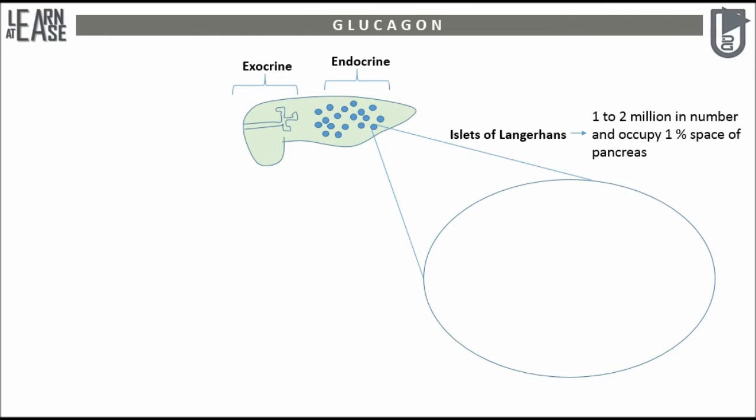Islets of Langerhans consist of 4 types of cells: alpha, beta, delta, and PP cells. They produce glucagon, insulin, somatostatin, and pancreatic polypeptide respectively.